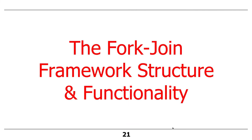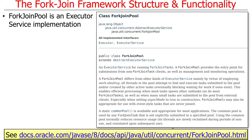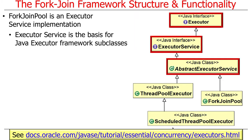Speaking about the structure of the ForkJoin framework, let's talk about how it's designed and what it does under the hood. ForkJoinPool is an executor service implementation, and if you take the class in the spring we'll talk more about what the executor service is — it's a very interesting set of interfaces and abstract and concrete classes that give you a wide range of ways to handle execution of concurrent tasks in Java.